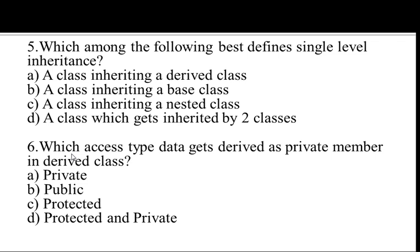Next, question number 6. Which access type data gets derived as a private member in the derived class? When we are using inheritance, there are three access specifiers: public, private, and protected. When the private type data gets derived, it remains a private member in the derived class. The answer is A, private.